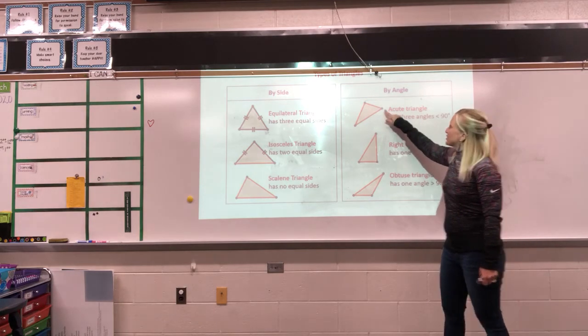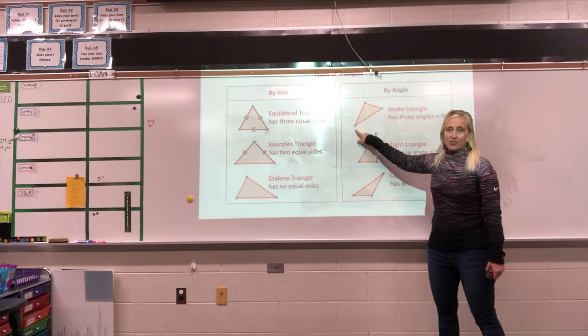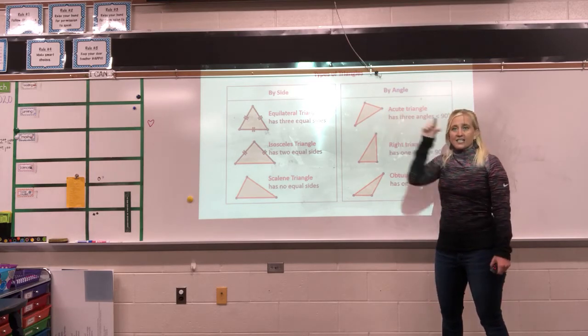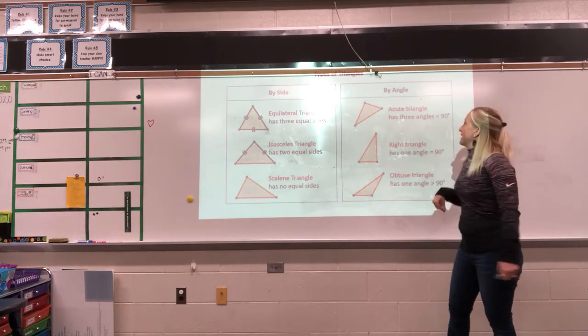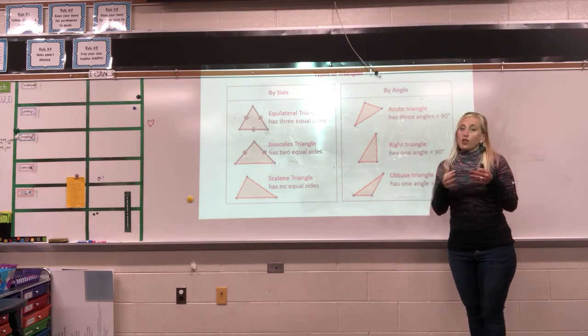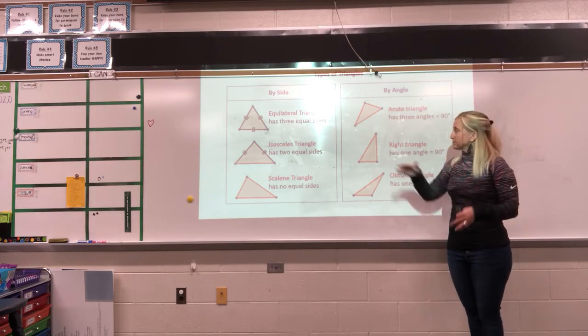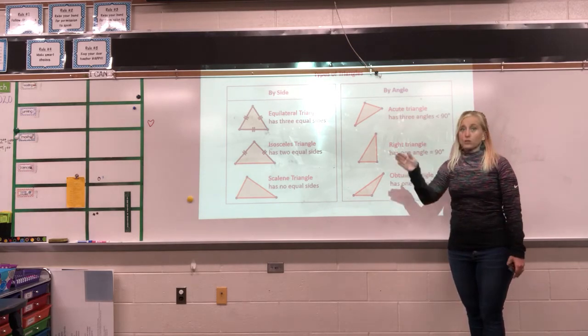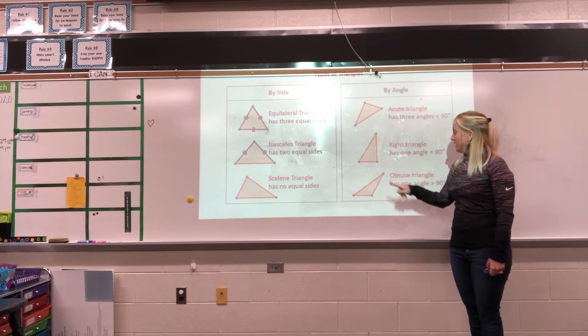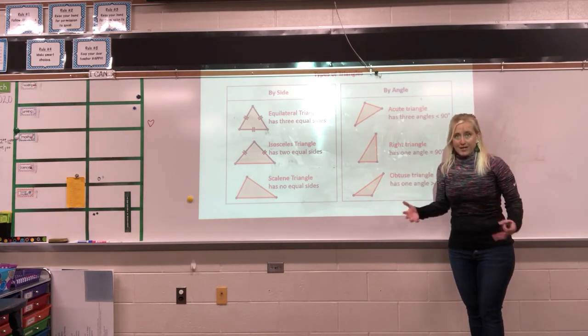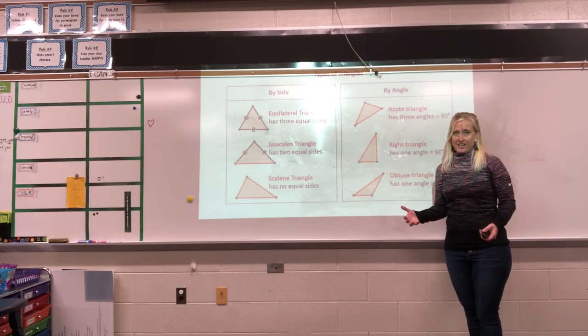If all three angles are smaller than 90 degrees, it's acute. It's a cute little triangle. Okay? So acute means all three angles are less than 90. Right is it has a right angle in it. And obtuse, it has an angle bigger than 90 degrees in it.